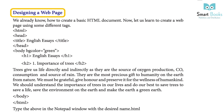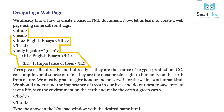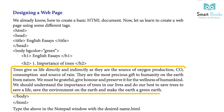Designing a web page: We already know how to create a basic HTML document. Let us learn to create a web page using some different tags. Example code: HTML > Head > Title: English SA > /Title > /Head > Body (background color green) > H1: English SA > /H1 > H2: Importance of Trees > /H2 > H3: Trees give us life directly and indirectly, as they are a source of oxygen production, CO2 consumption, and source of rain.